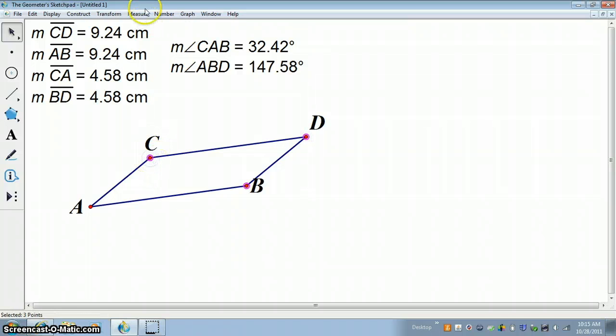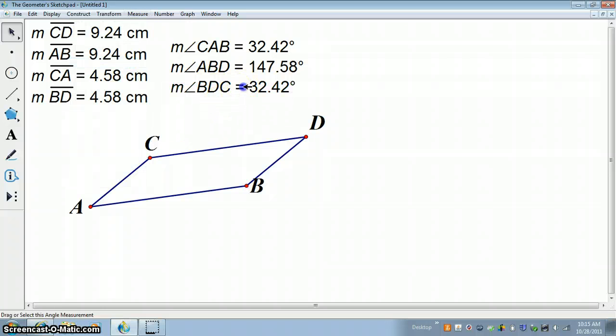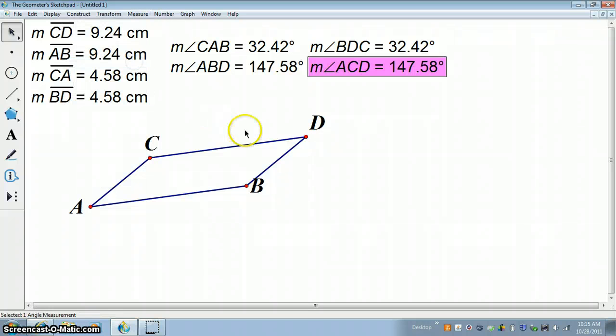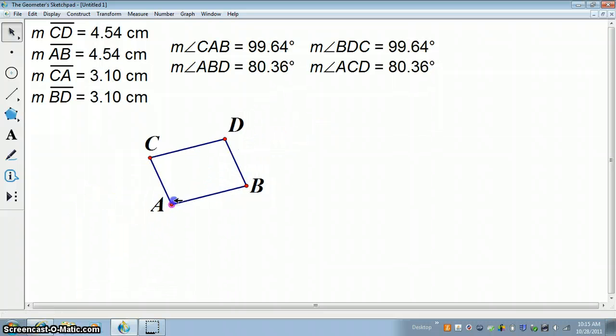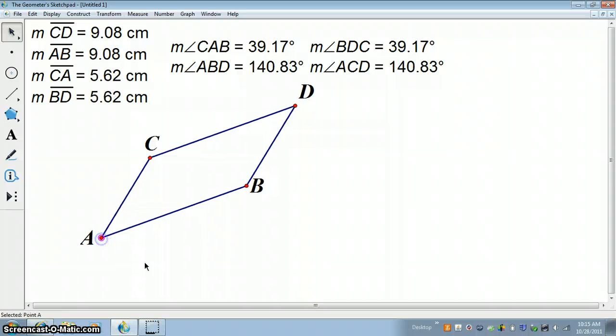So now let's measure angle D. Notice angle D and A are congruent. So those are opposite angles. They're across from each other in the parallelogram. So those opposite angles are congruent. And let's measure angle C. And notice angle C is also congruent to angle B. So it appears that in a parallelogram, opposite angles are congruent. And when I drag on here, we can see that's true.